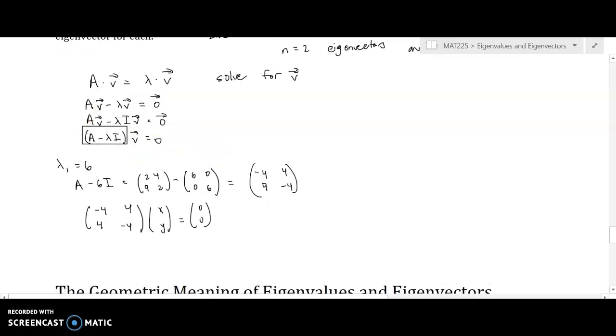So to do that, I'm now going to create my augmented matrix, [[-4, 4], [4, -4]] augmented by [0, 0]. And now I'm going to perform reduced row echelon form. So recall that these are the coefficients of X and Y, and here are my constants.